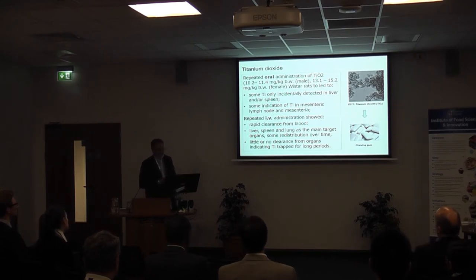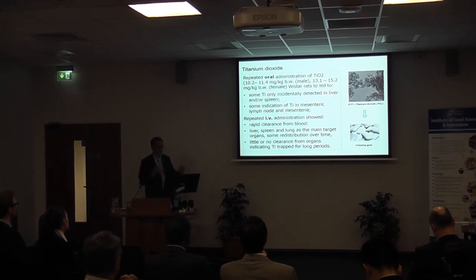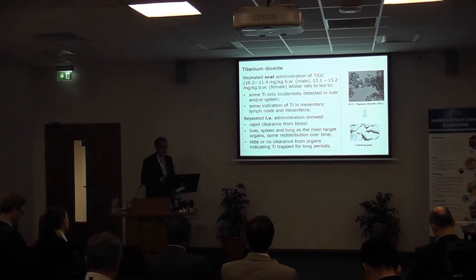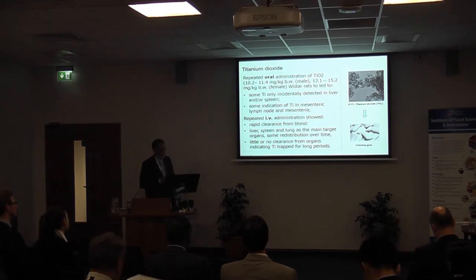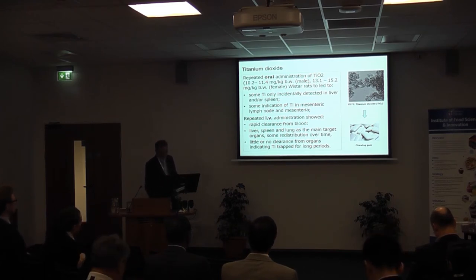Titanium dioxide — which gives the brilliant white color in cake icing and chewing gum coatings — is composed of nanoparticles agglomerated into larger clusters. This Nanogenotox study found that oral administration showed only incidental detection of titanium in liver or spleen, with some indication in lymph nodes. Intravenous administration showed rapid clearance from blood, but liver, spleen, and lungs were the main target organs. Once particles ended up in those organs, they were effectively trapped and would not be cleared easily.